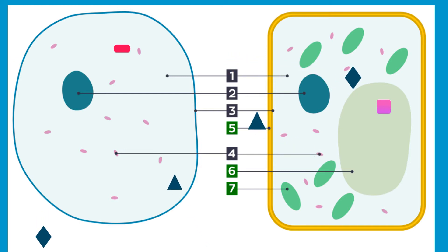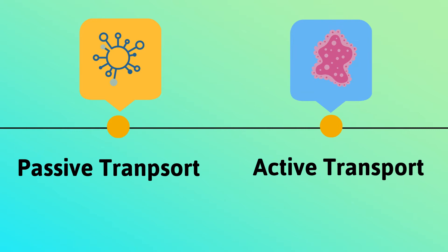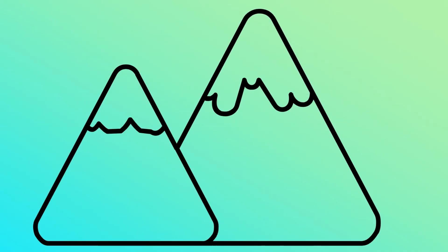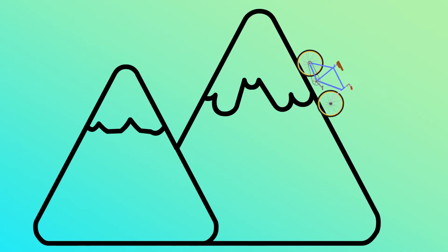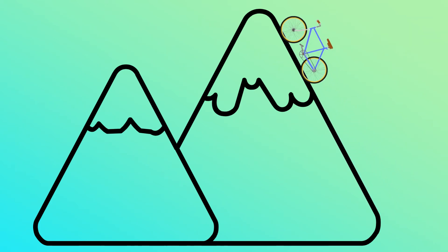There are two types of cell transport: passive transport, which does not require energy, and active transport, which requires energy. Think of passive transport as riding a bike down a hill, and active transport as riding the same bike up the hill, which requires a lot more energy.